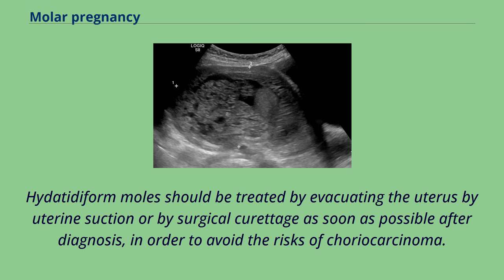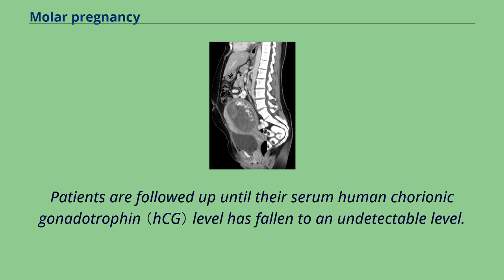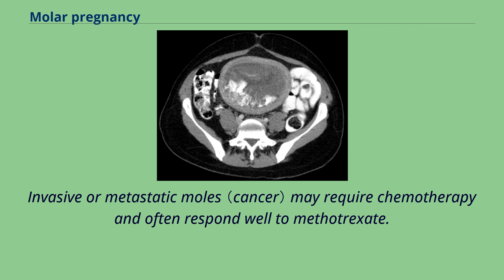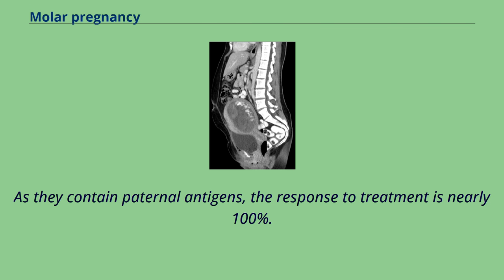Hydatidiform moles should be treated by evacuating the uterus by uterine suction or by surgical curettage as soon as possible after diagnosis, in order to avoid the risks of choriocarcinoma. Patients are followed up until their serum human chorionic gonadotropin level has fallen to an undetectable level. Invasive or metastatic moles may require chemotherapy and often respond well to methotrexate. As they contain paternal antigens, the response to treatment is nearly 100%.